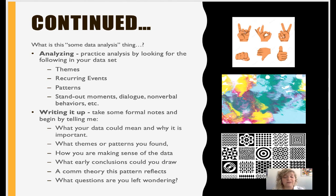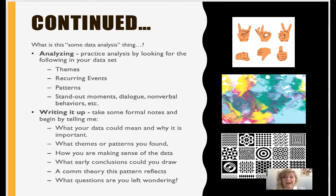Once you see everything in front of you — perhaps circled, highlighted, or noted — you're going to start taking some formal notes, and you will turn these notes in alongside your data set. The formal notes should begin by telling me what you think this all could mean, what your data means, and why you think it's important. You can tell me what themes or patterns you found, how you're making sense of the data, and maybe even start to draw some early conclusions. You can also start thinking about whether there's a communication theory that is being reflected in your data set, and of course any questions you are left wondering.